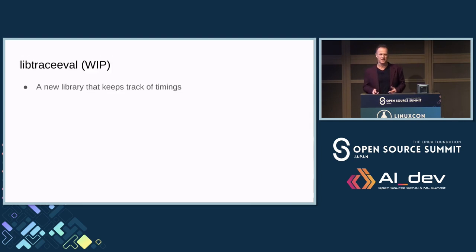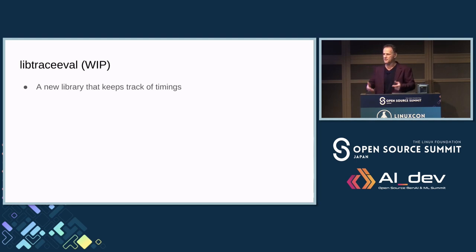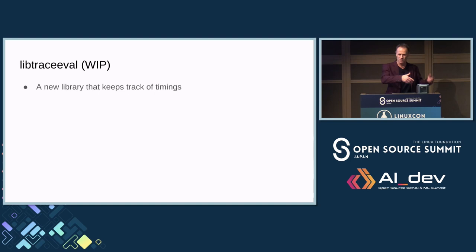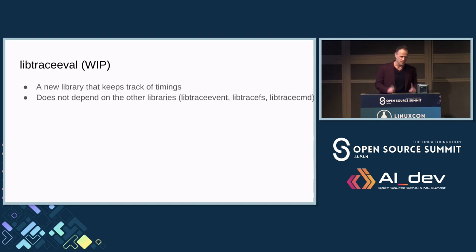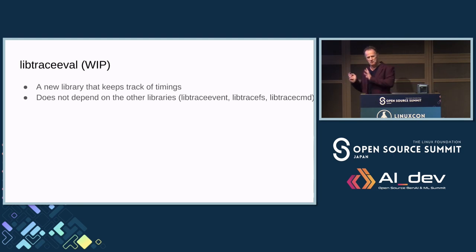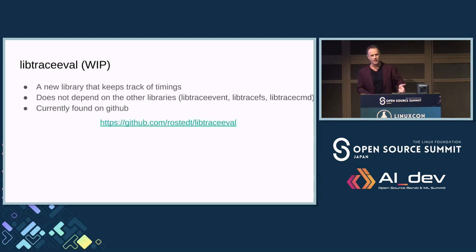Now I'm going to jump into a new library — libtraceeval, a work-in-progress. It's actually over a year old. I noticed when writing analysis tools that I kept doing the same thing over and over. As Larry Wall said, the best programmers are the lazy programmers because we don't like to do things more than once. I found that when doing the trace iterate walk I'm constantly looking at events and how they relate to other events, like sched_wake and sched_switch. This library doesn't depend on any other libraries and might even have an Apache license — it's on GitHub.